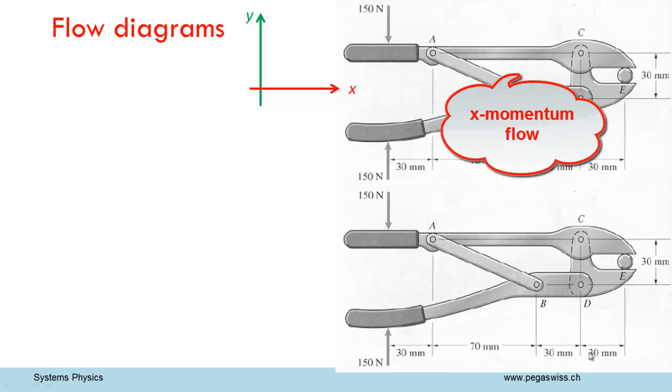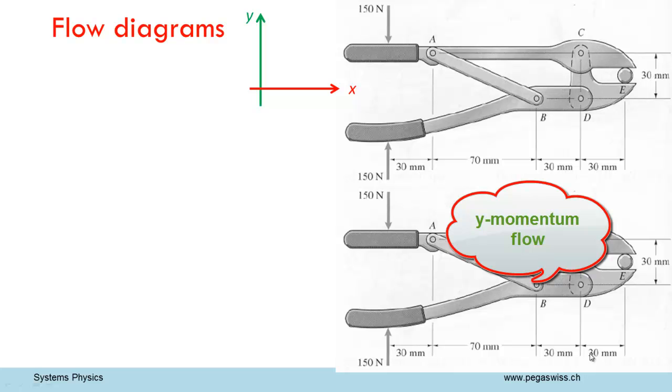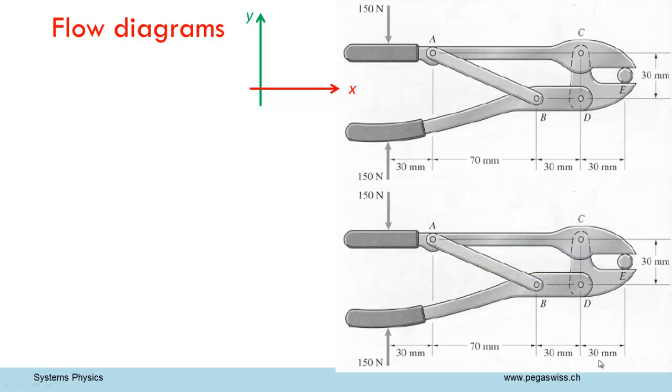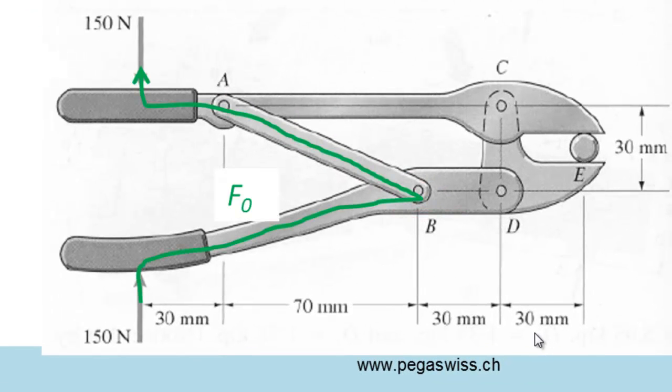Here are two pictures of the same pliers and a coordinate system. In the top picture, I have indicated the x-momentum flows, and in the bottom picture, I have indicated the y-momentum flows. Let's start with the applied momentum flow. On the bottom handle, there is a force acting in positive y-direction, so here a momentum of 150 N flows into the pliers. This momentum flow goes back out through the top handle. The outflow of momentum is described by the force acting in negative direction that is indicated here. Now we can draw this momentum flow of 150 N that goes from the bottom handle through the top handle. I call it F0.